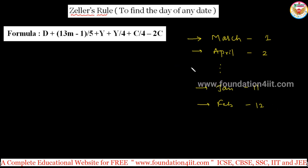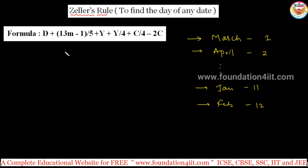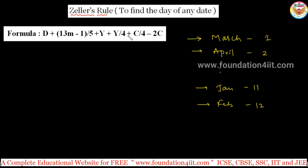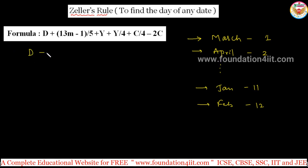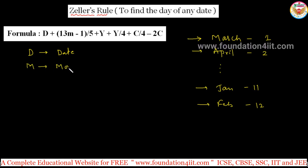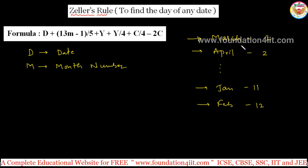Any year will start from March. The formula is: d + ⌊(13m − 1) / 5⌋ + y + ⌊y/4⌋ + ⌊c/4⌋ − 2c. With a little practice you can remember this formula easily. Here, d is the date, m is the month number — starting from March, so March is 1, April is 2, and so on.